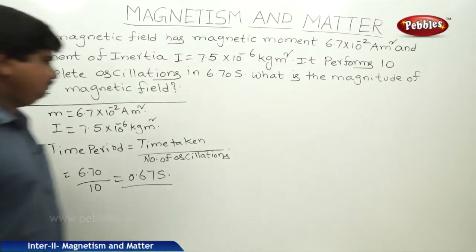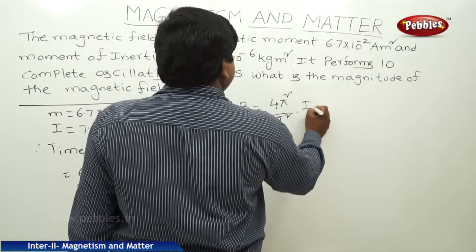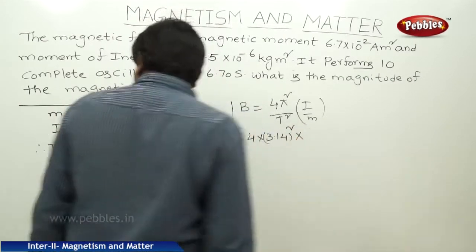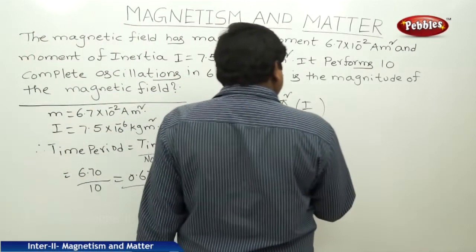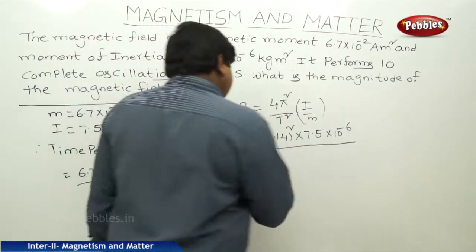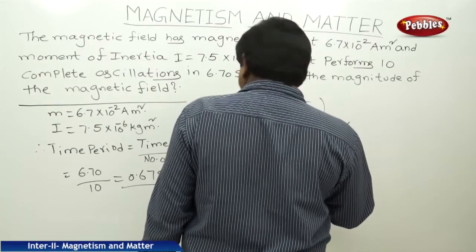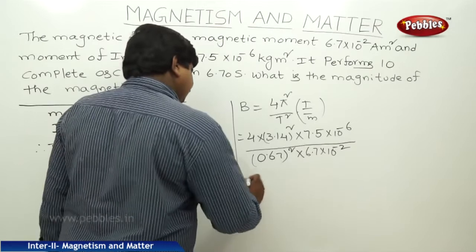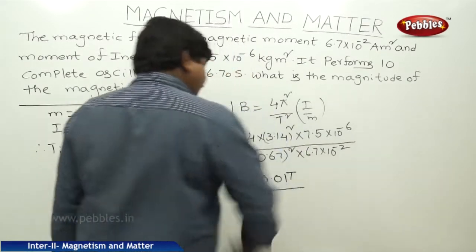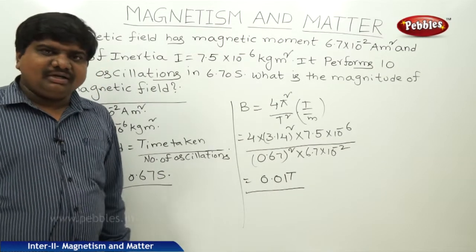Now we find the magnetic field. B is equal to 4 pi squared by T squared into I by M. Substituting: 4 into 3.14 squared into 7.5 into 10 to the power of minus 6, divided by 0.67 squared into 6.7 into 10 to the power of minus 2. Simplifying all these values, we get B equal to 0.01 Tesla. This is the magnetic field obtained with the given magnetic moment and moment of inertia.